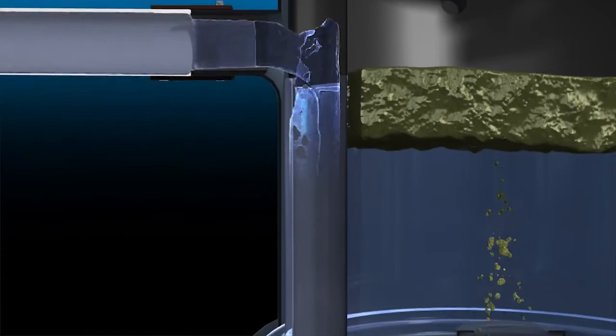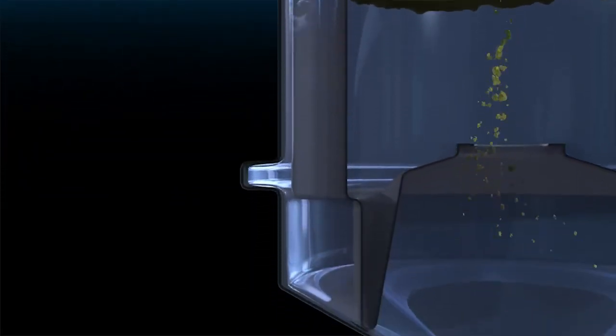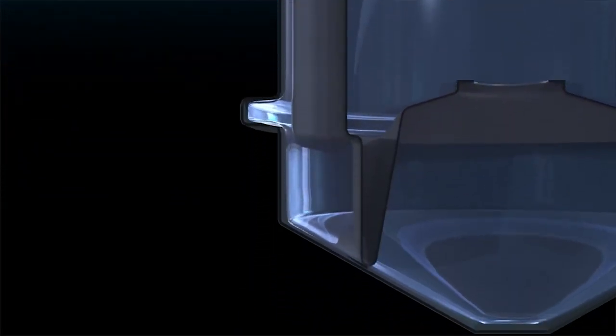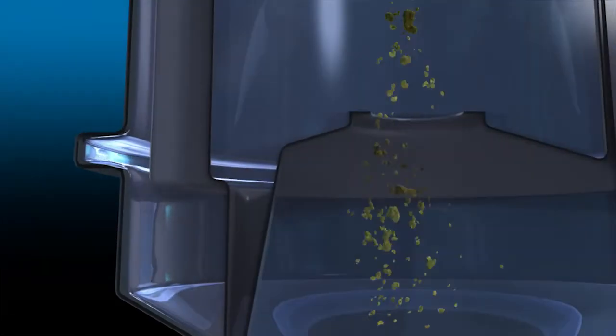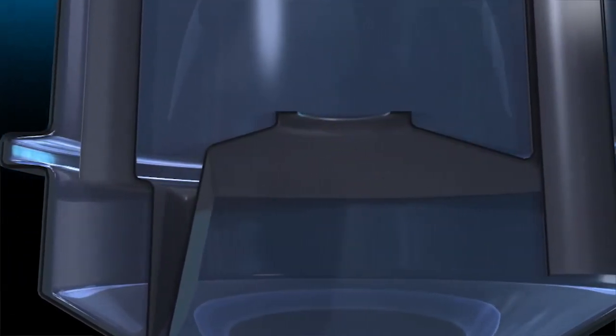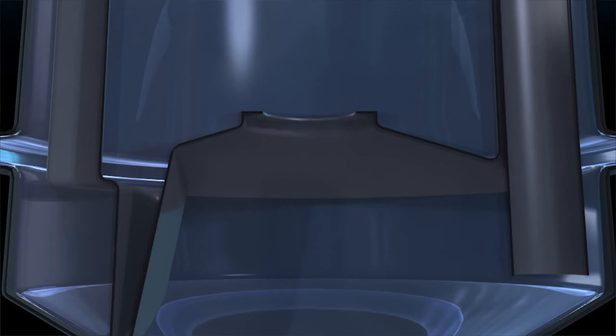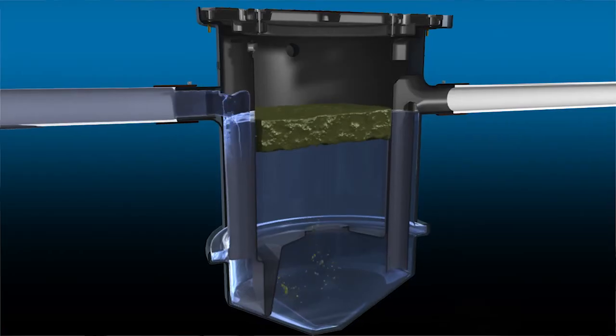The vertical baffle breaks the flow of water into the unit, disrupting its path and preventing water from jet streaming out of the unit. Trapsilla's horizontal baffle prevents this water from interacting with the grease mat, retaining all previously separated grease.